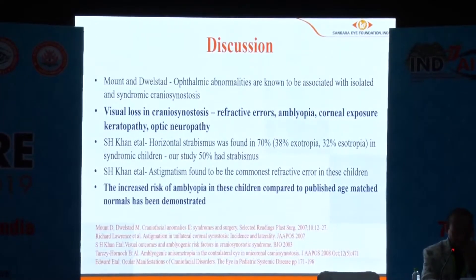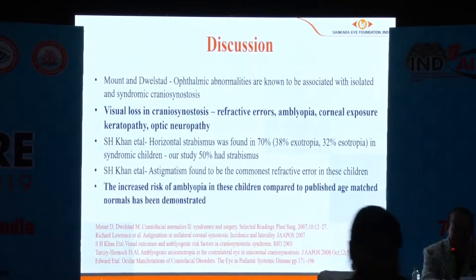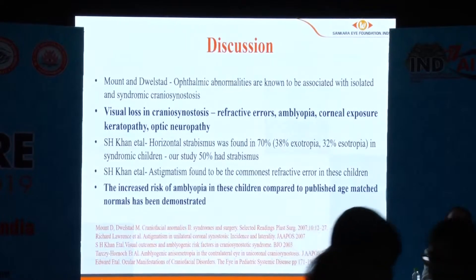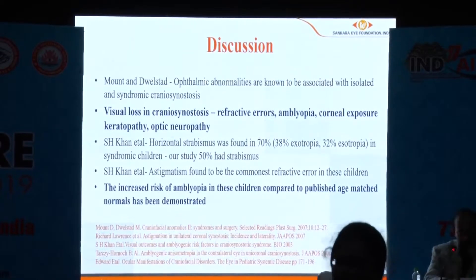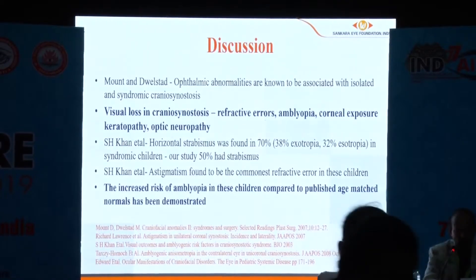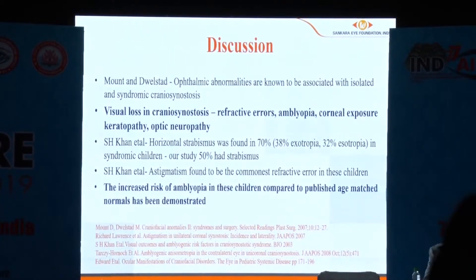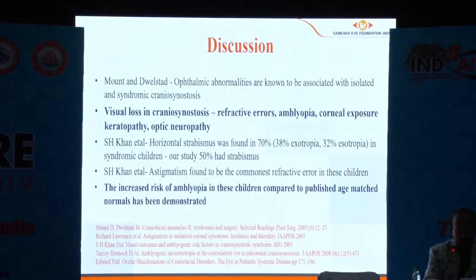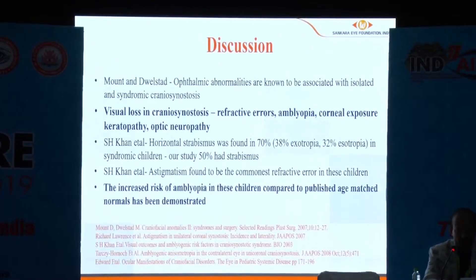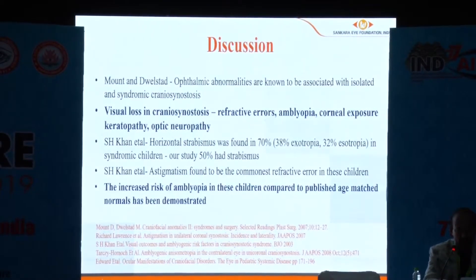Ophthalmic abnormalities are known to be associated with both isolated and syndromic craniosynostosis. Visual loss in these children is mainly due to refractive error, amblyopia, corneal exposure keratopathy, and optic neuropathy.